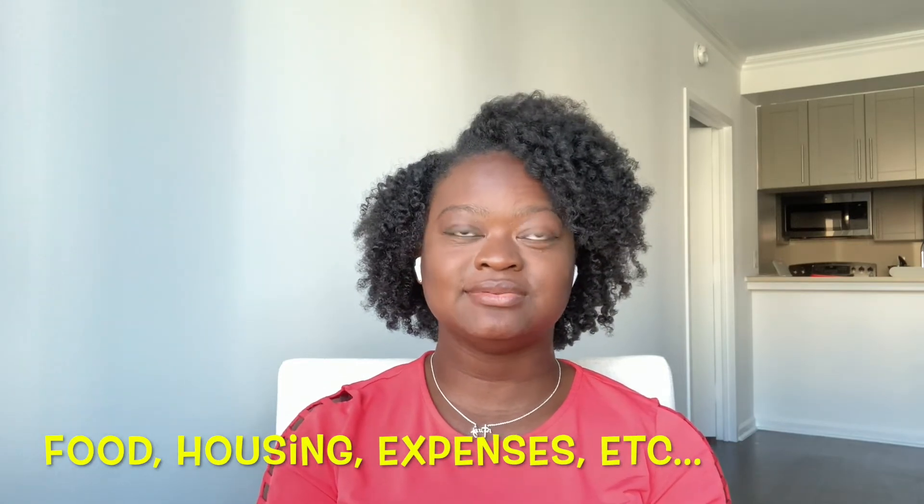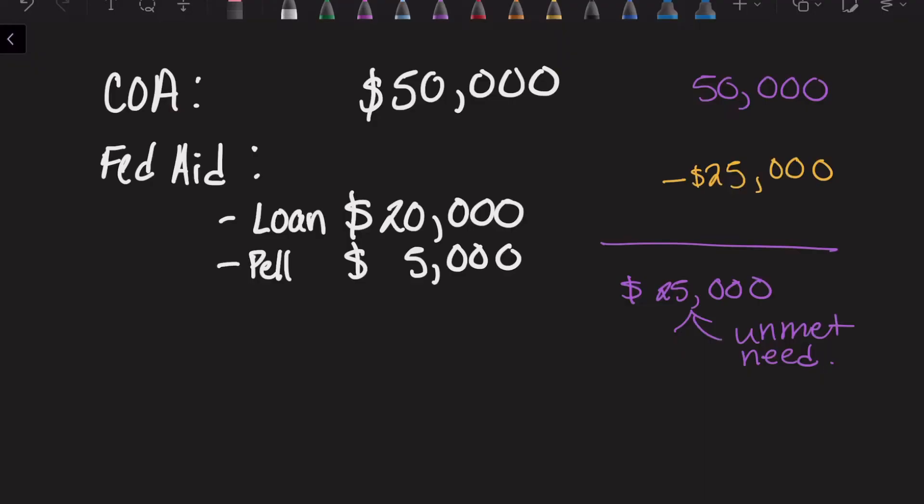Now they're not going to say 'send me $25,000' — that's just your unmet need, which includes things like transportation. Let's say out of that $25,000, the school only requires you to send them $15,000. If you accept your loan of $20,000 and Pell Grant of $5,000, you'd only have to pay the school $5,000. But if you reject the loan, all you have is the Pell Grant, and you'd have to pay the school $25,000. The rest is just an estimate for cost of living.